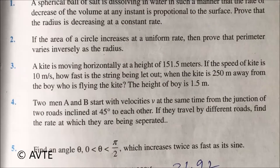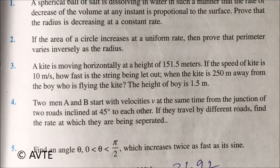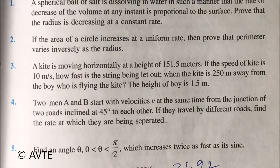This is question number four from exemplar AOD. Two men A and B start with velocities V at the same time from the junction of two roads inclined at 45 degrees to each other. If they travel by different roads, find the rate at which they are being separated.